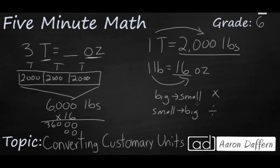And so we have, on one row, we have 36,000. On the next row, we're going to put a zero for our tens place, and then 6,000. So our answer is going to be 96,000 ounces. So 3 tons is the same as 96,000 ounces.